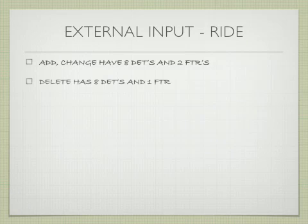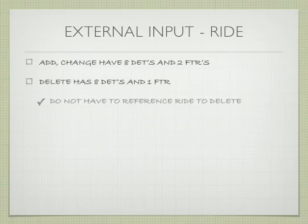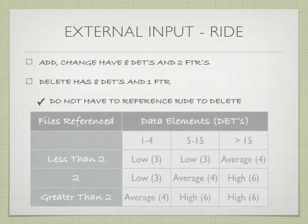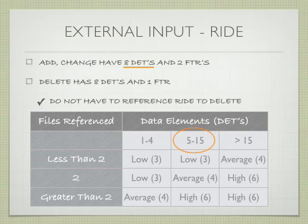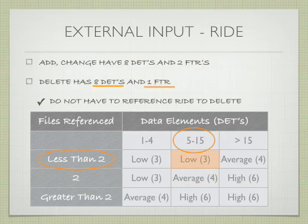Delete has eight data elements and one FTR, because you do not have to reference Ride to make a deletion. Eight data elements puts us in the middle column, and two FTRs puts us in the middle row — meaning Add and Change are rated as average, four function points. Delete has eight data elements and one FTR, making it a low, or three function points.